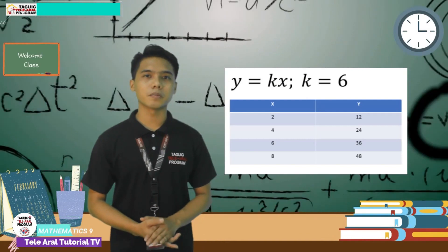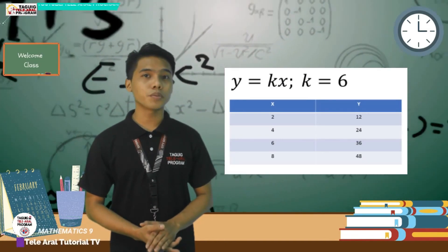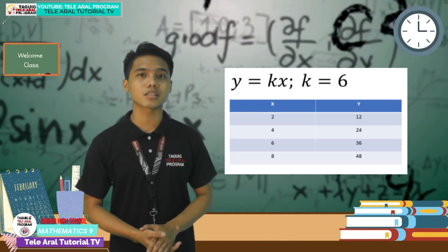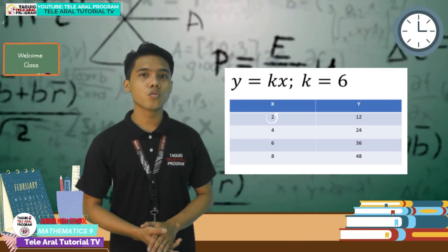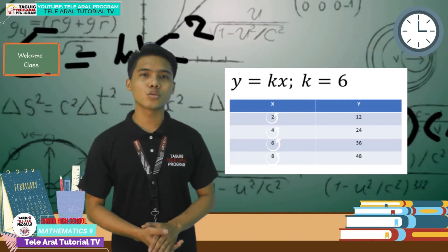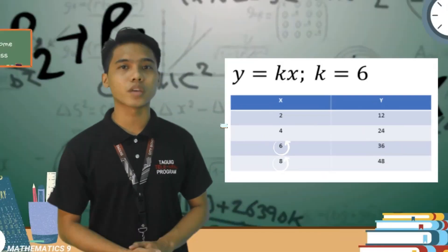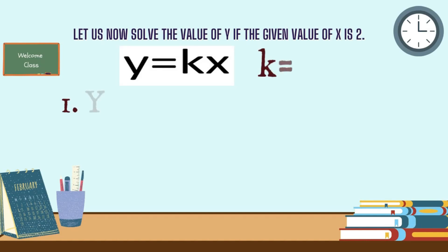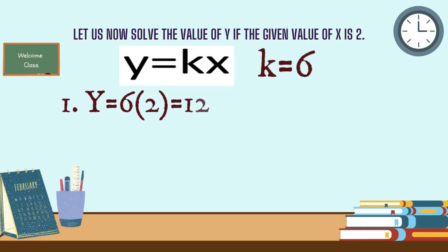Our task is to compute for the value of y in y equals kx, given that the following values of x are 2, 4, 6, and 8, and using 6 as the value of k. Let us now solve the value of y if the given value of x is 2. y equals kx, which is 6 multiplied by 2, is equal to 12. It means the value of y when x is 2 is 12.